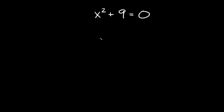What's up you freaking geniuses? In this video I'm going to teach you how to solve quadratic equations that have imaginary numbers or solutions. So let's start with this one right here: x squared plus 9 is equal to 0. Solve for x.